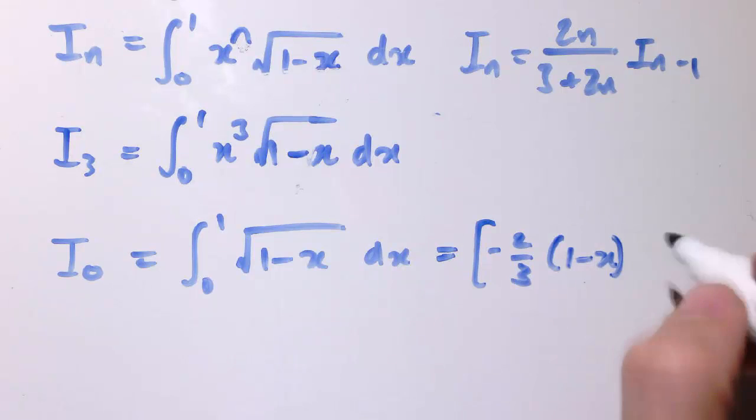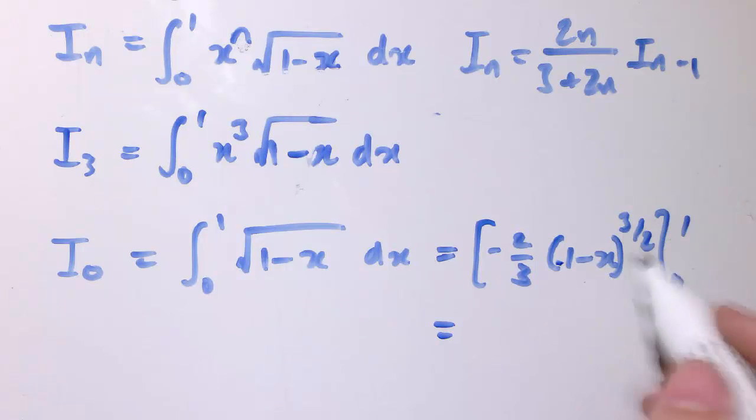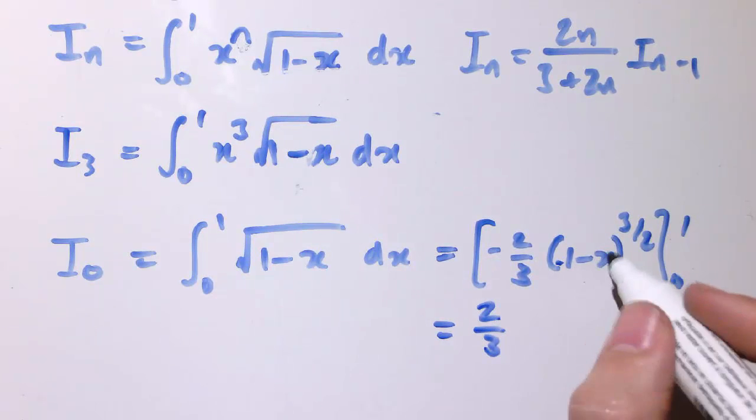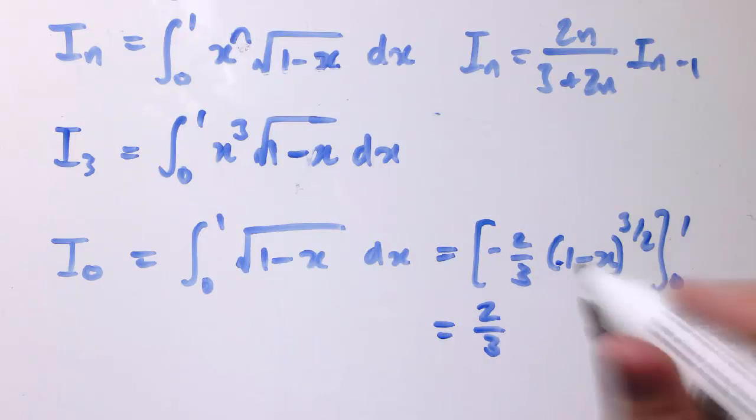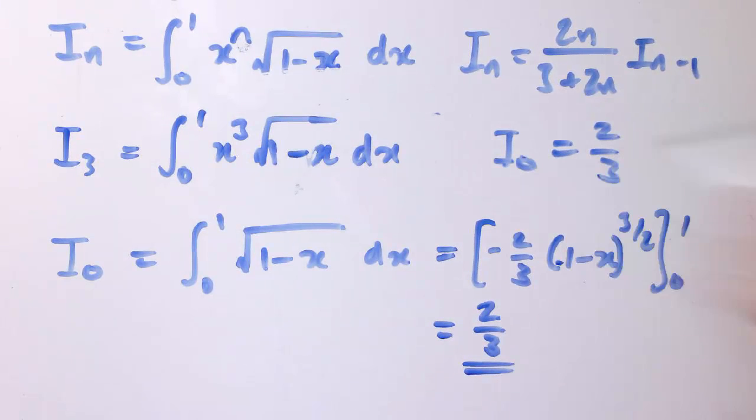And integrating that gives minus 2 thirds, 1 minus x to the 3 over 2 between 0 and 1. And then, plugging in the limits of 1 and 0. When I put 1 in, this is 1 minus 1 to the 3 over 2, so that's just 0. So that goes away. And I then do minus minus, so plus 2 thirds, 1 minus 0, which is just 1, all to the 3 over 2. So that's just 1, so actually it is just 2 thirds. So we've got i0 equals 2 thirds.